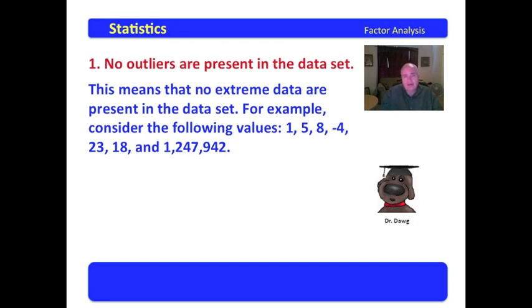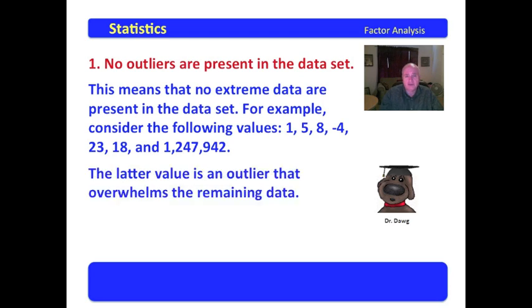This means that you have no extreme data. I give you the example here of the data 158, 42,318 and 1,247,942. When you look at that data set, 1,247,942 is so large that it just swamps everything out. It just overwhelms the remaining data, so it would be considered an outlier.